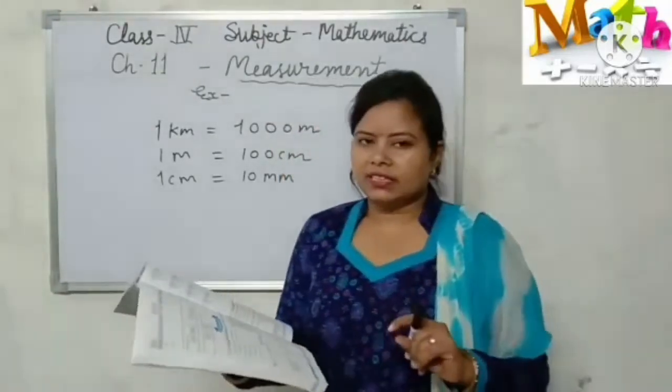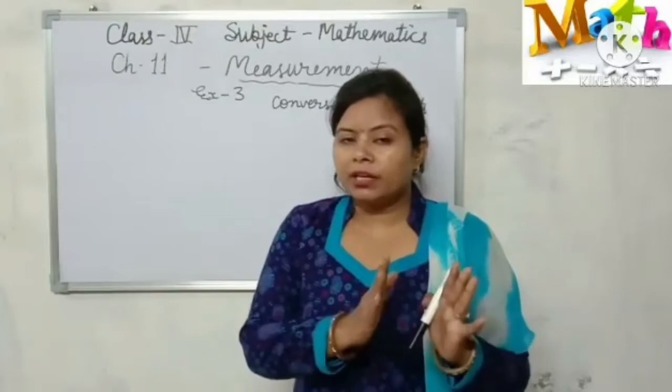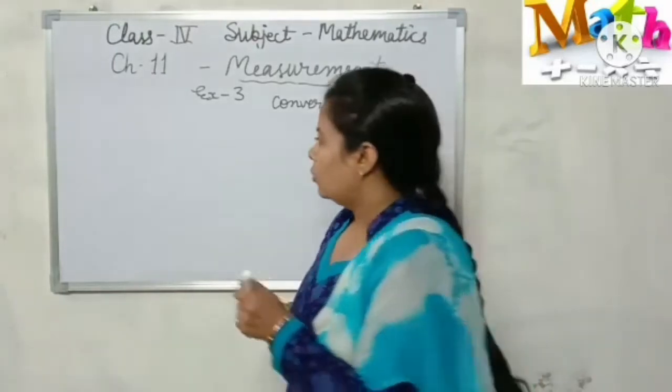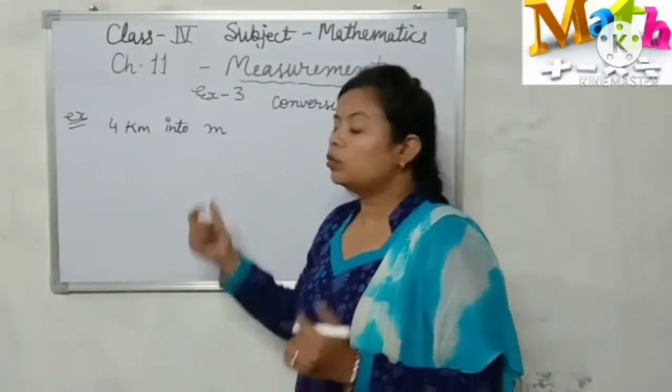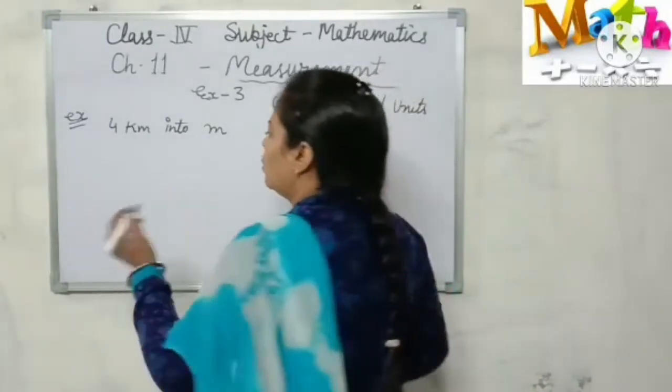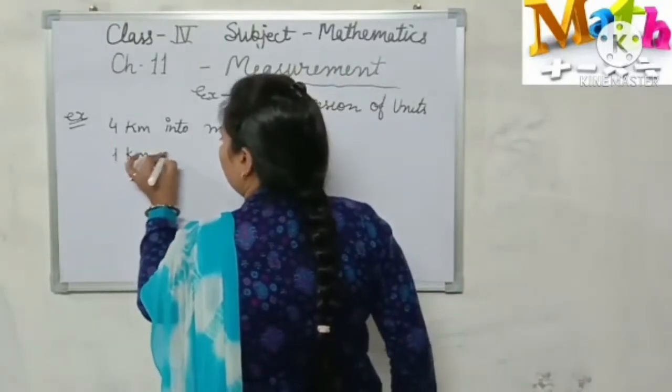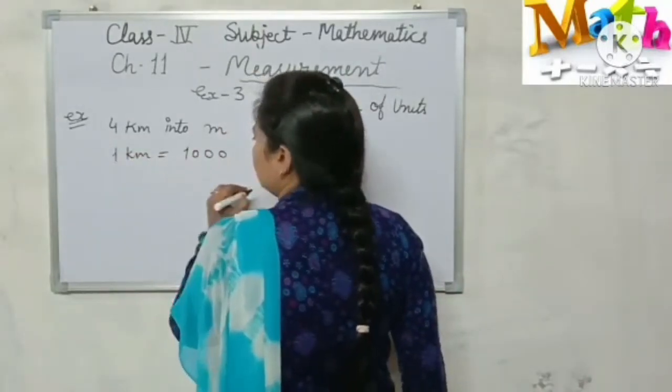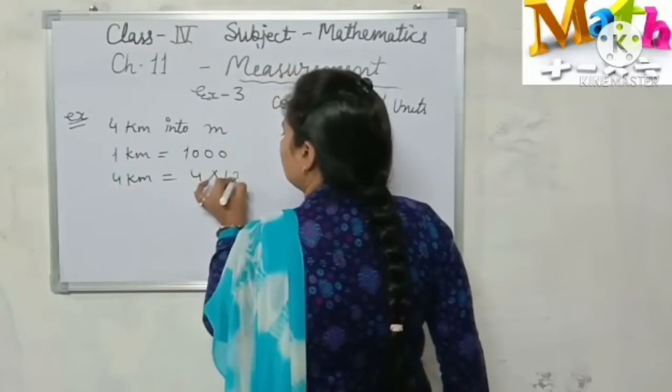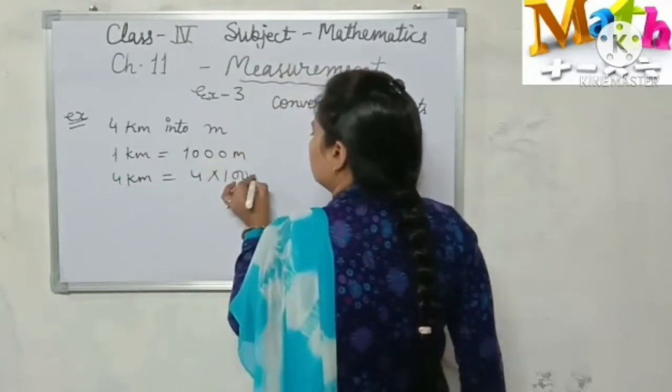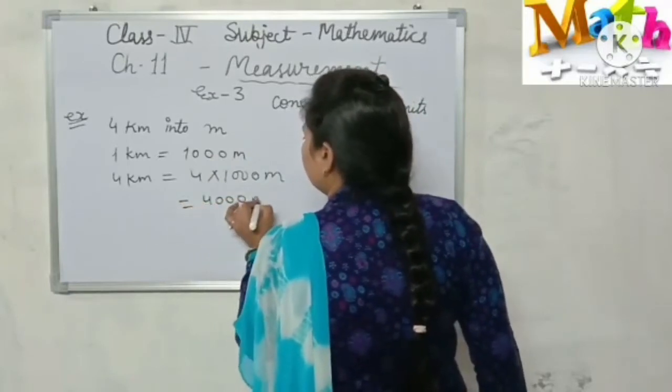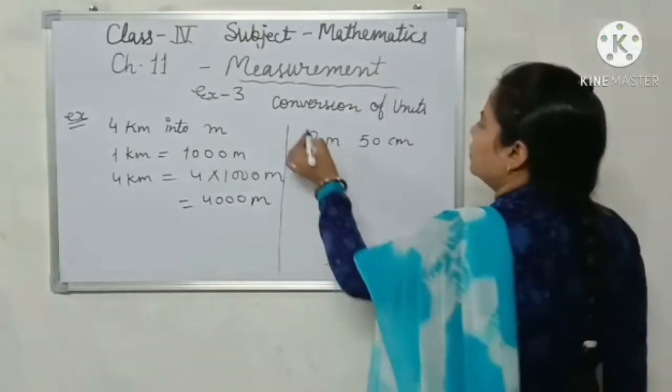Now, conversion of units. Keep this in mind: when we convert from bigger unit to smaller unit, then we multiply. Look at this example: 4 kilometer into meter. We need to convert 4 kilometer to meters. As you know, 1 kilometer equals 1000 meters. So 4 kilometers equals 4 into 1000 meters. So the answer is 4000 meters.